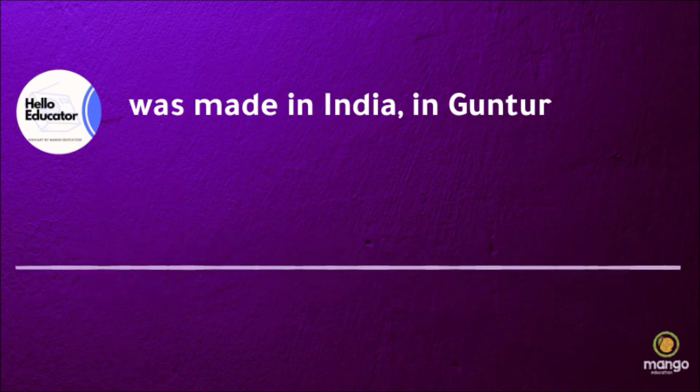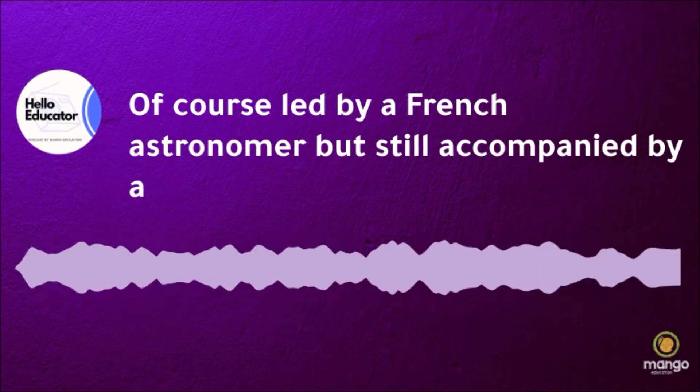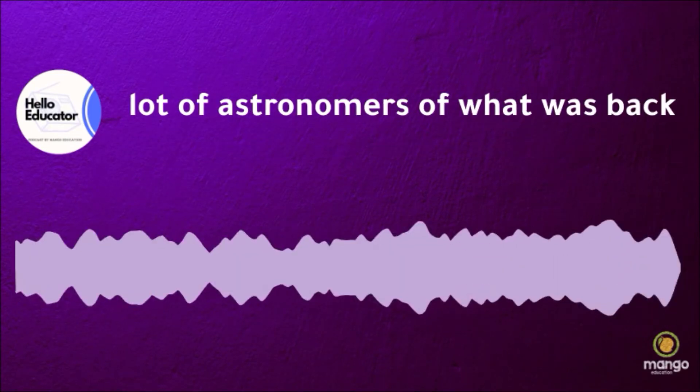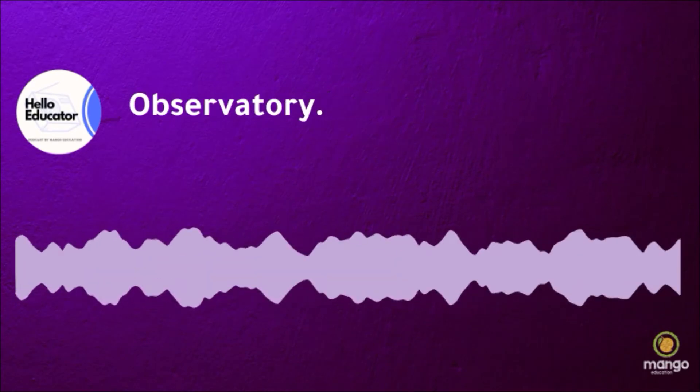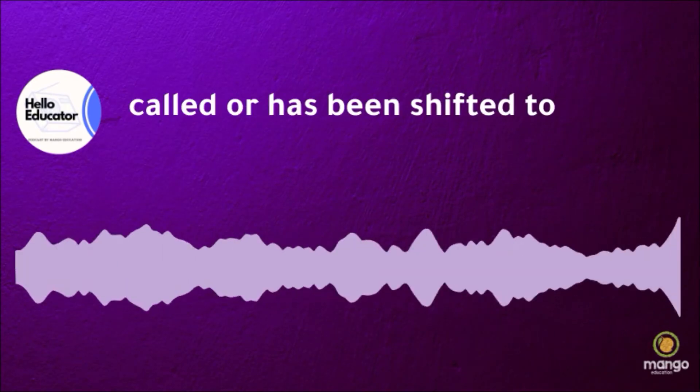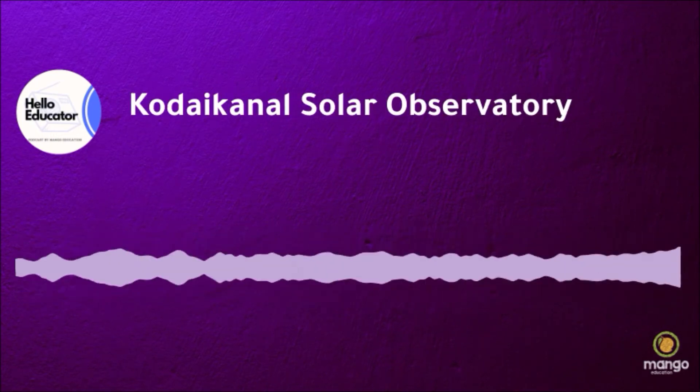That discovery, it is interesting to know, was made in India, in Guntur during an eclipse. Of course, led by a French astronomer, but still accompanied by many astronomers of what was back then called Madras Observatory. But today, the Madras Observatory has been shifted to Kodaikanal and is called the Kodaikanal Solar Observatory.